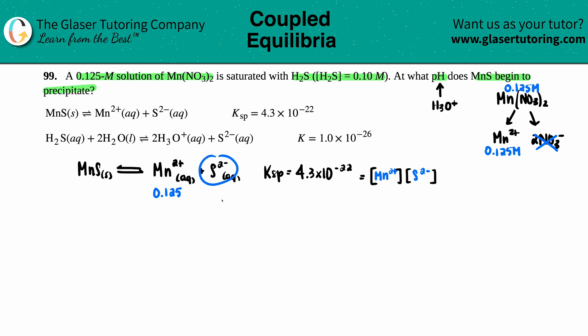Did they tell me anything about S²⁻? Well, they gave me H₂S, but that's over here. That's not S²⁻. So I'm just going to label this as X. And now I have both variables to plug in. Mn²⁺ is the 0.125 and the S²⁻ is the X.